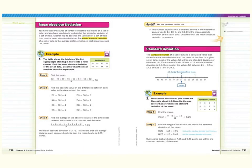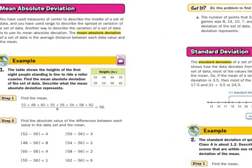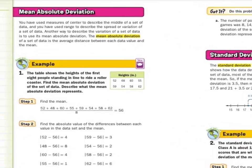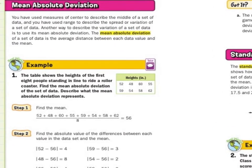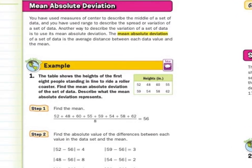For mean absolute deviation, you have used measures of center to describe the middle of a set of data, and you have used range to describe the spread or variation of a set of data. Another way to describe the variation of a set of data is to use its mean absolute deviation. The mean absolute deviation of a set of data is the average distance between each data value and the mean.